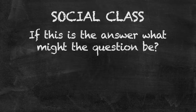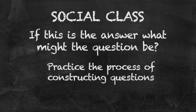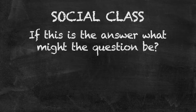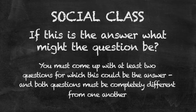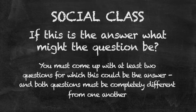The game allows students to practice the process of constructing questions, and you can increase the level of challenge by adding in caveats. For example, display 'social class' on the board, then say 'If this is the answer, what might the question be?' and add the caveat: 'You must come up with at least two questions for which this could be the answer, and both questions must be completely different from one another.' This really pushes students to think in more depth about how to construct good questions.